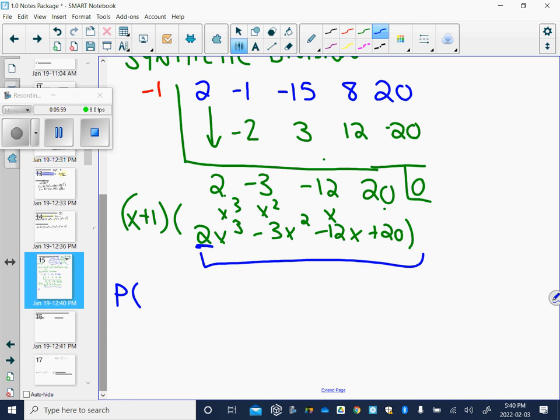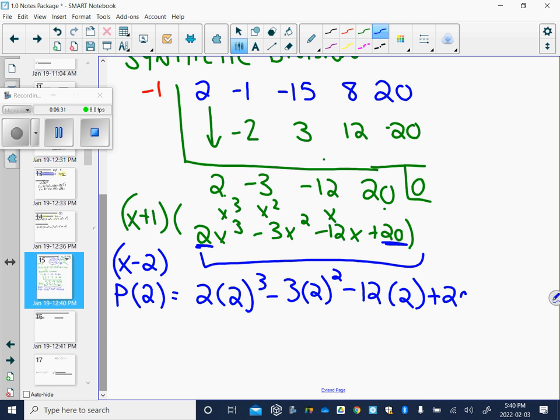Our leading coefficient is 2. Our constant is 20. So we have similar candidates. I went through and did this and found one. You're going to have to try trial and error to find these. I happen to know that x minus 2 is a factor. So we can put p of 2 in when I do that. 2 times 2 cubed minus 3 times 2 squared minus 12 times 2 plus 20.